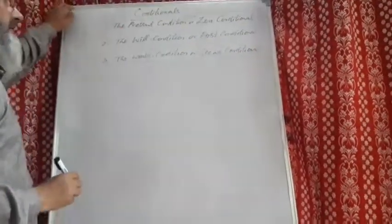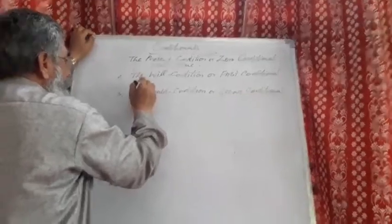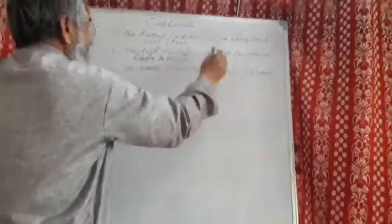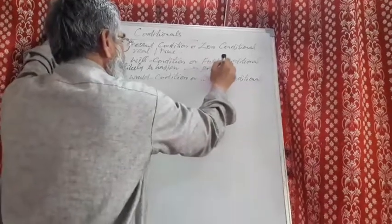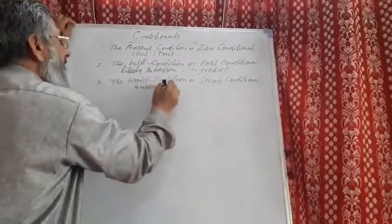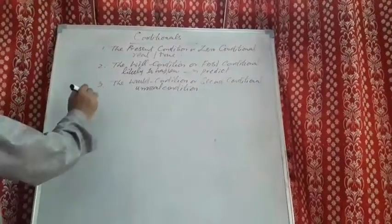In case of the present condition, a real condition or true condition is expressed. In case of a real condition, something likely to happen is predicted — we predict some situation that is likely to happen. And in the third type, or the would condition or second conditional, an unreal condition is expressed.